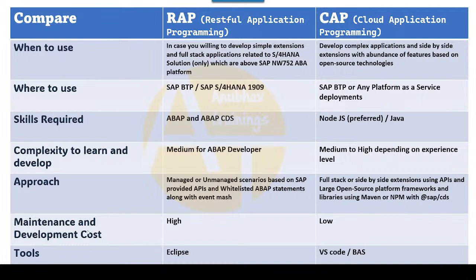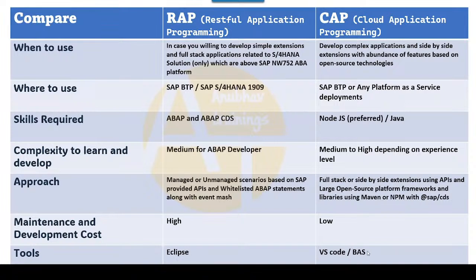Coming to maintenance and development cost — this is one important factor to note. RAP-based deployments are more expensive compared to CAP. In the longer run, CAP is better than RAP because your deployment cost for an ABAP on Cloud environment is much more expensive compared to the Cloud Foundry cloud runtime. Coming to tools: to build a RAP application, we use Eclipse tools, but for a CAP application, you can use VS Code or the BAS tool.